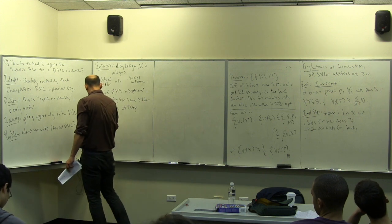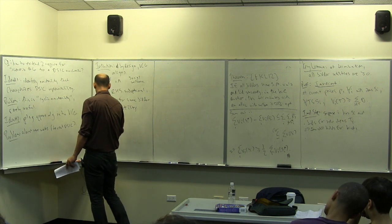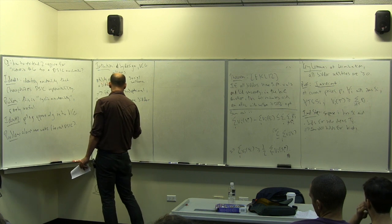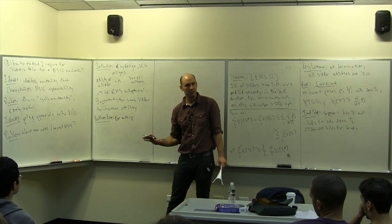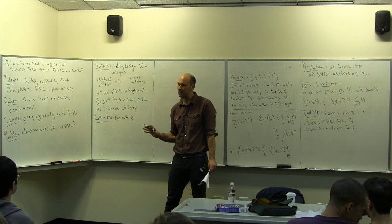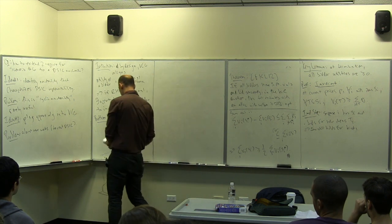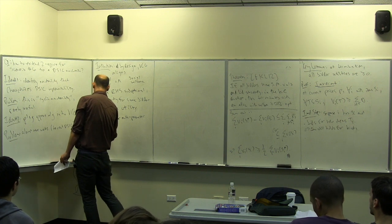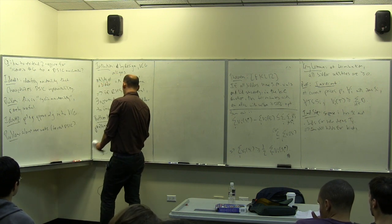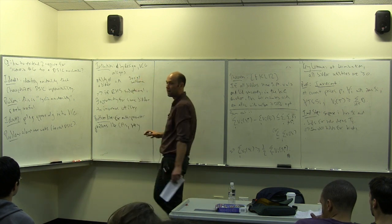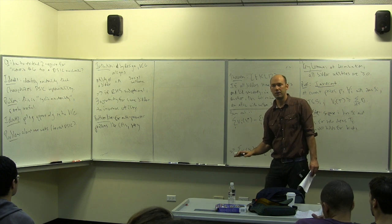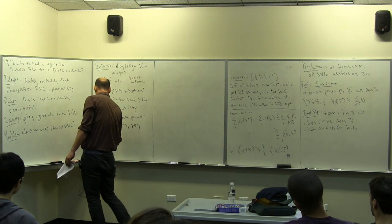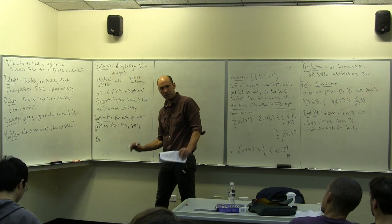An important takeaway from this discussion: for multi-parameter problems, there's a very big difference from single-parameter mechanism design — both in how well we understand it and what seems possible versus impossible. For multi-parameter problems like the combinatorial options we've been discussing, if you insist on dominant strategy incentive compatibility, the design space is very meager. We'll work hard to do the best we can in this limited design space, but it seems very limited indeed.